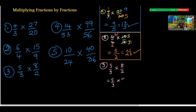Since 8 over 2 equals 4, I would say 5 over 3 times 4 over 1. Nothing can divide across, so I multiply the numbers at the top and the numbers at the bottom. 5 times 4 is 20, and 3 times 1 is 3 — still an improper fraction. How many 3s in 20 is 6, which is 18, remainder 2 over 3.